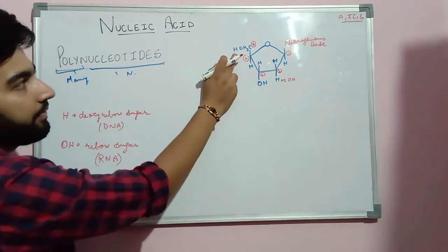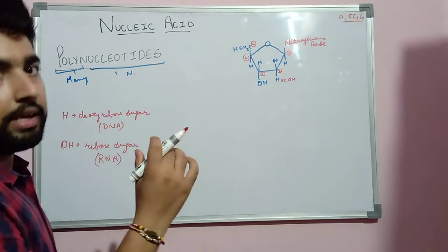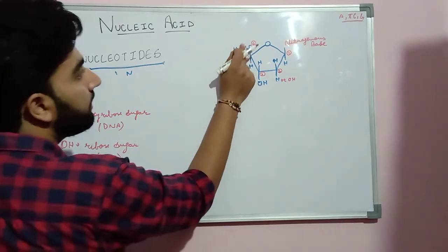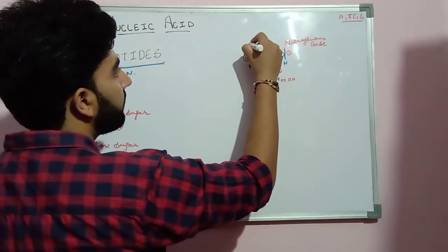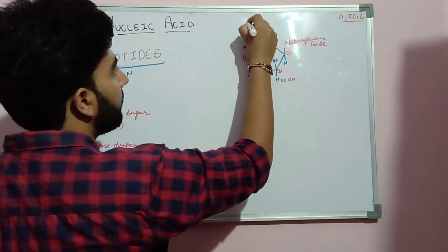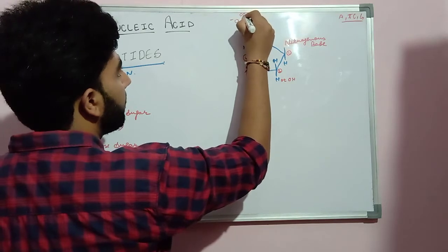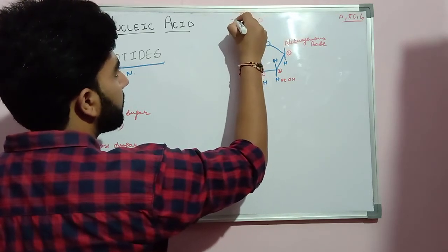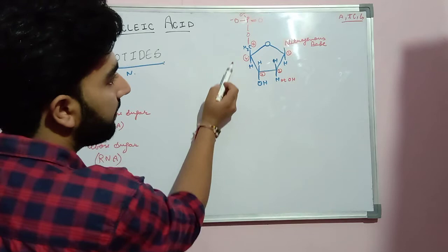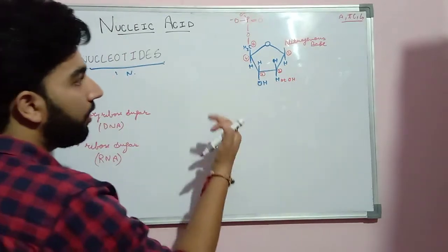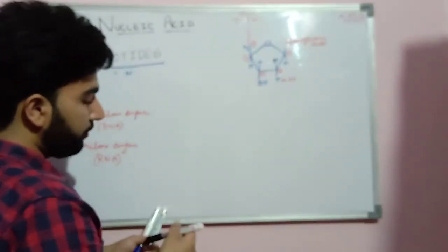At the fifth position, the first ion of phosphoric acid is present. The OH will remove from here and the bond forms: C-O-P-O negative and O negative. This is the structure of phosphoric acid at the 5th carbon position, and this is the structure of a single nucleotide.